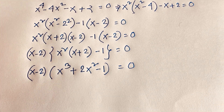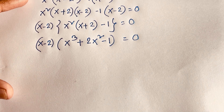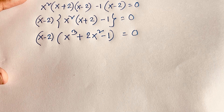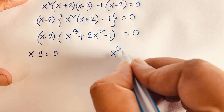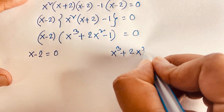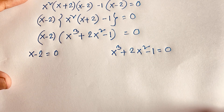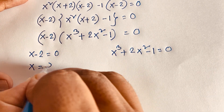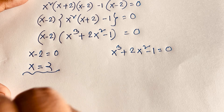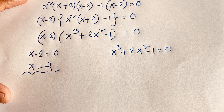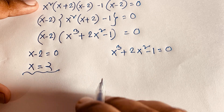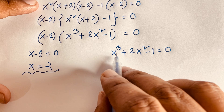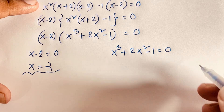We now have two cases. Case 1: x - 2 = 0, and Case 2: x³ + 2x² - 1 = 0. From Case 1, x = 2. So our first answer is x = 2. Since the original equation is degree 4, we expect 4 roots total. Now we need to evaluate the cubic equation x³ + 2x² - 1 = 0.